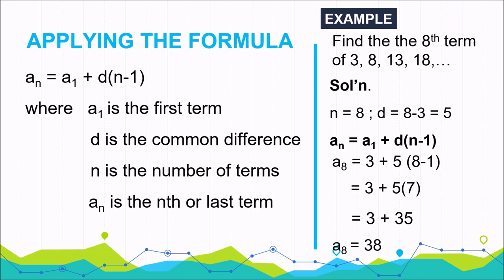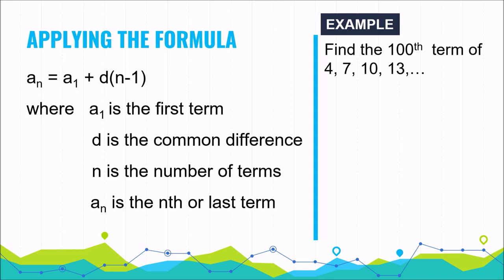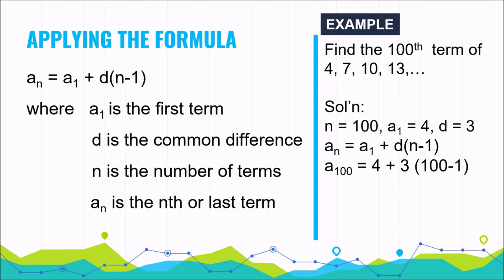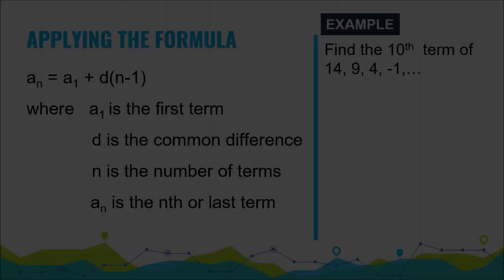Next example: find the 100th term of 4, 7, 10, 13. The value of n is 100, the first term is 4, and the common difference is 3. Using the formula, a sub n equals a sub 1 plus d times the quantity n minus 1, we substitute to get 4 plus 3 times the quantity 100 minus 1, which gives 4 plus 297, and the final answer is 301.